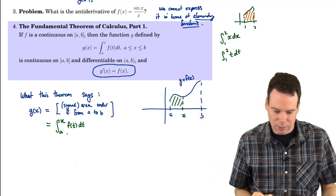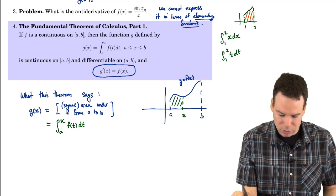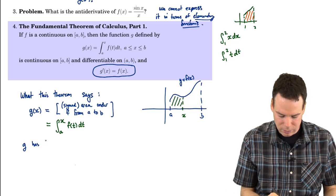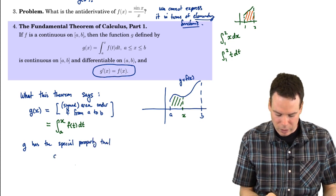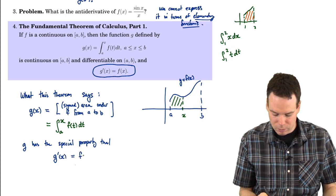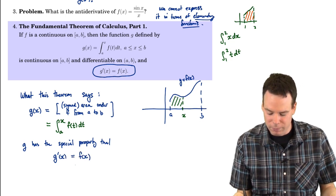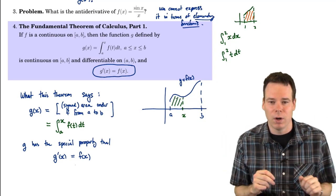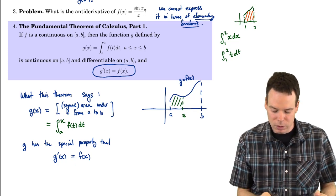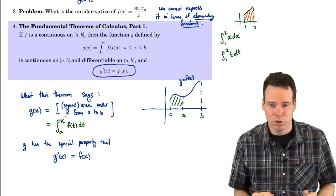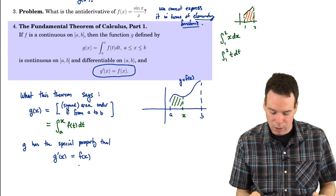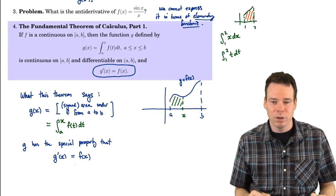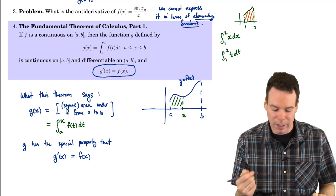So we've got our function g defined in this way. Now g has a very special property: when you differentiate it, you get back to the function f. You start with f, construct g as the area so far — the signed area so far, or the integral. As you change x, the upper limit of integration, the values from the integral change. So g is a real function of x, and it's differentiable, and its derivative is f.